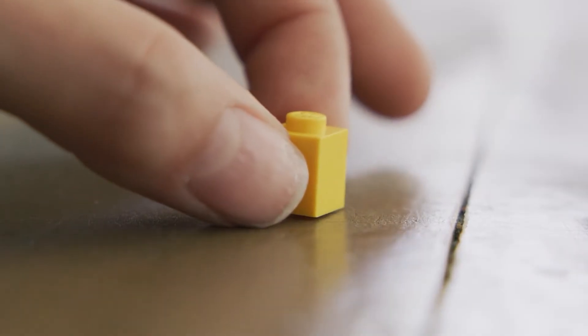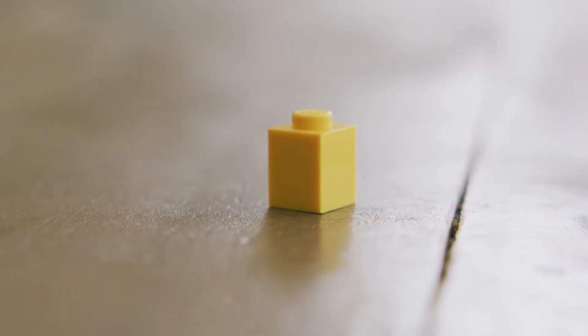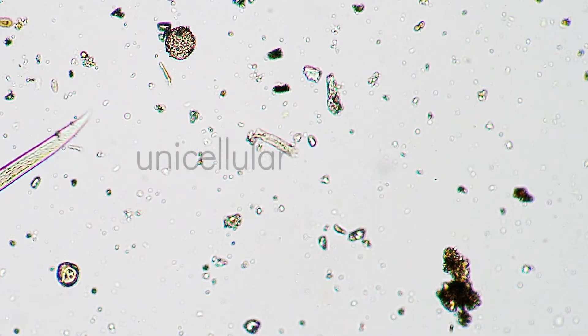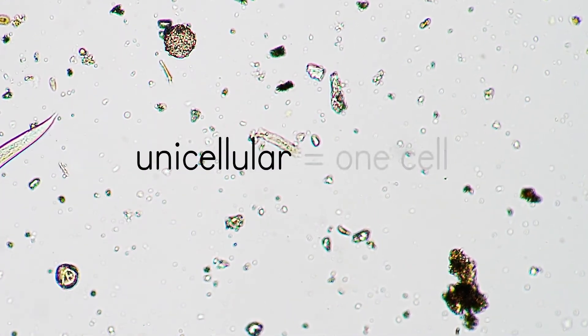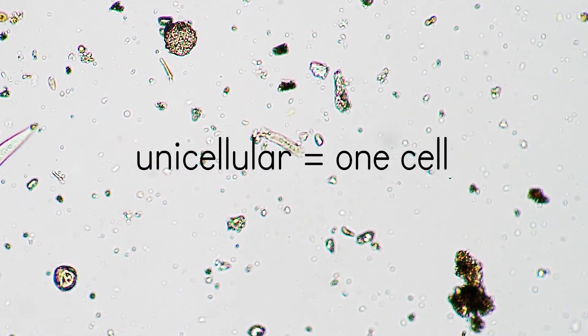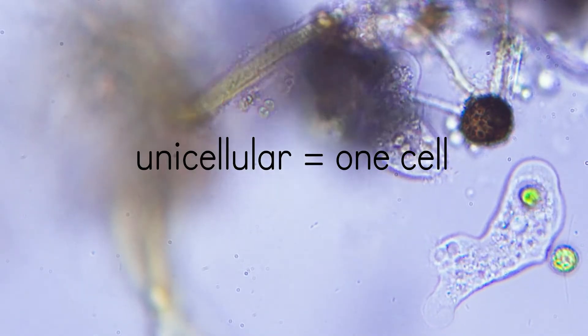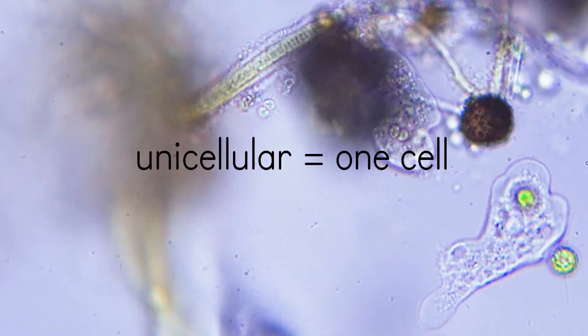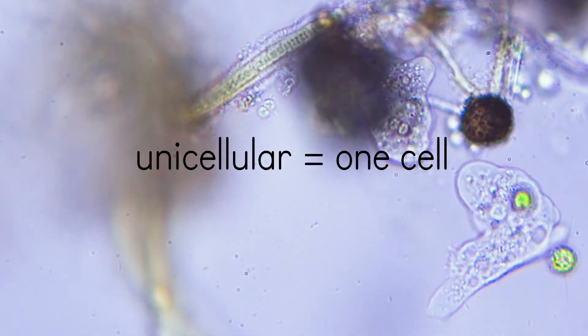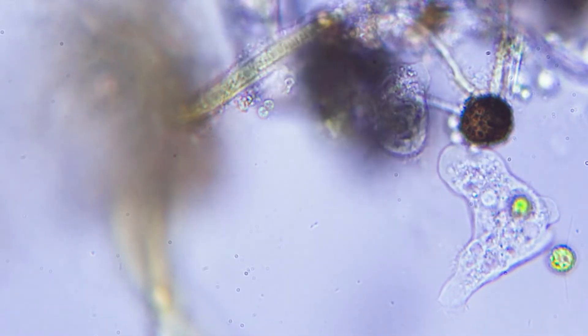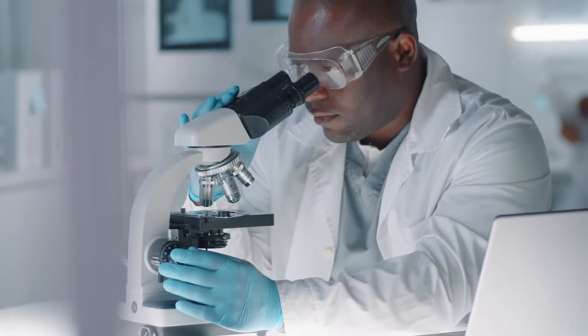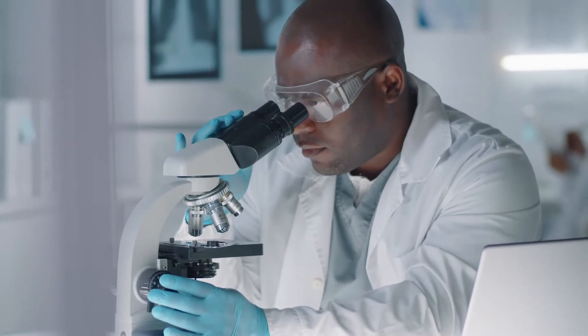Some living things in our world are made up of only one single cell, like this single building brick. These organisms are called unicellular, and entire kingdoms of life are made up of these one-celled creatures. Unicellular organisms are also known as microorganisms. They are everywhere, but they are so small that you cannot see them without a microscope.